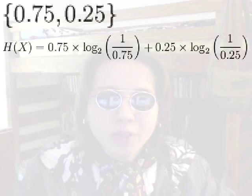So if the strange coin is our information source, what is its entropy? It's going to be 0.75 times log base 2 of 1 over 0.75, plus 0.25 times log base 2 of 1 over 0.25.